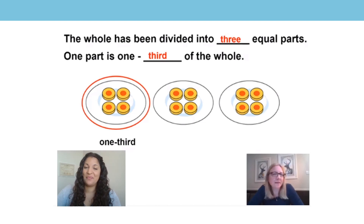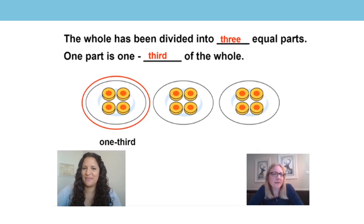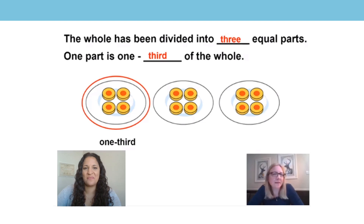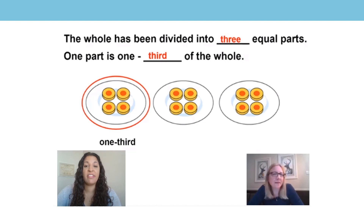In today's session we will be using similar representations as used in some of the previous lessons. You might remember seeing these representations in the lesson with Mrs. Sawyer a few weeks ago. Don't worry if you haven't seen this lesson though. She was sharing 12 biscuits between three plates. On each plate there was one third of the whole, and each plate had four biscuits.